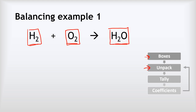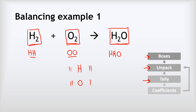Next I unpack the formulas, which helps me see how many of each atom there are. H₂ means two H's, O₂ means two O's, and H₂O is two H's and one O. Then I do a tally chart counting the atoms on each side. On the left I've got two hydrogens and on the right two hydrogens — that looks good. But for oxygens I've got two on the left and only one on the right.